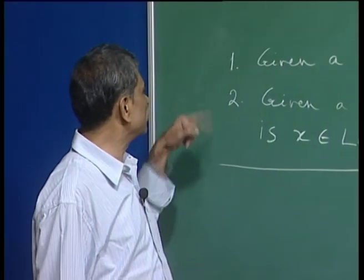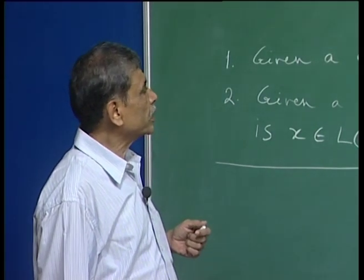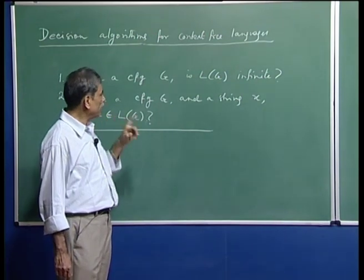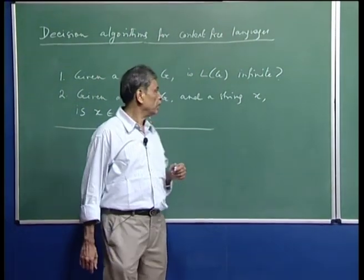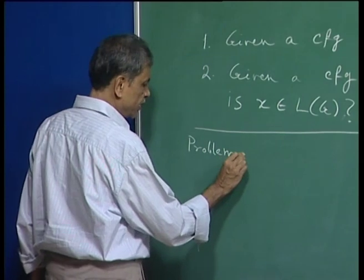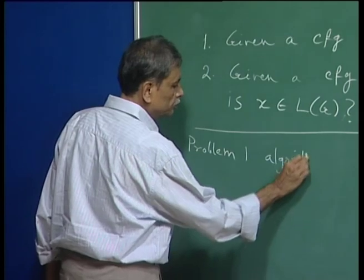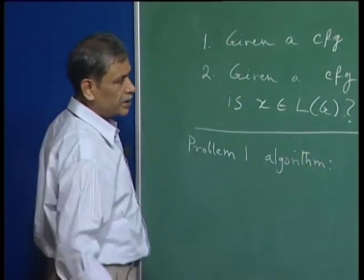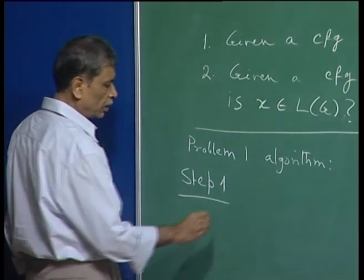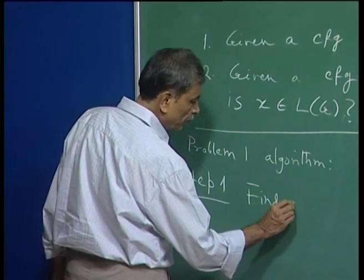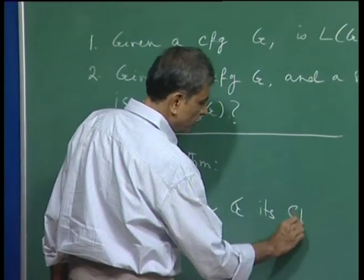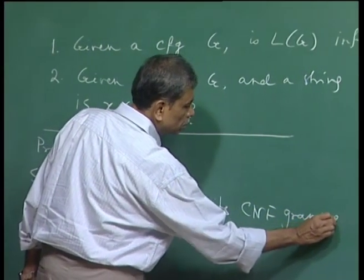Today we will provide algorithms for two decision problems for context-free languages. The first one is to determine, given a context-free grammar G, if the language generated by the grammar is infinite or finite. For this problem, let us say Problem 1, we will provide an algorithm sketch. You are given the grammar G as input. Step 1: find from G its Chomsky Normal Form grammar G1.